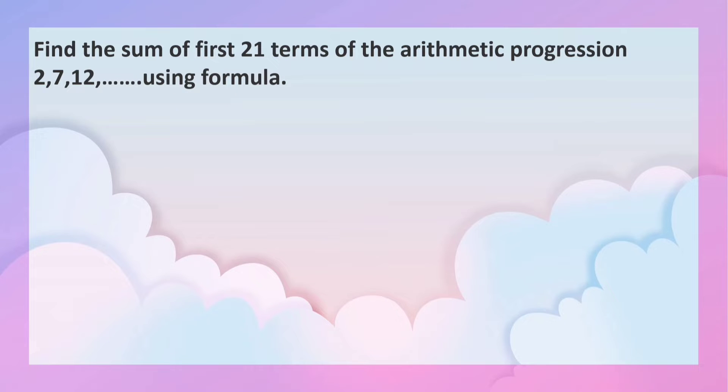Find the sum of first 21 terms of the arithmetic progression 2, 7, 12, using formula.